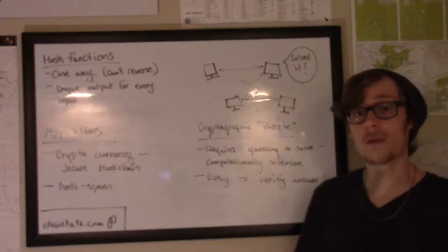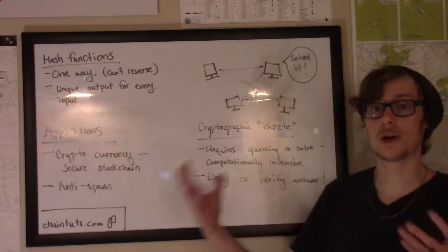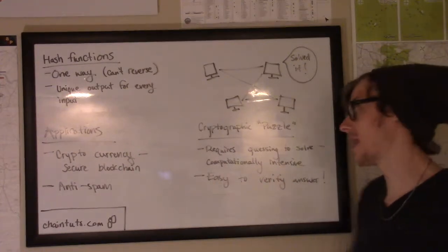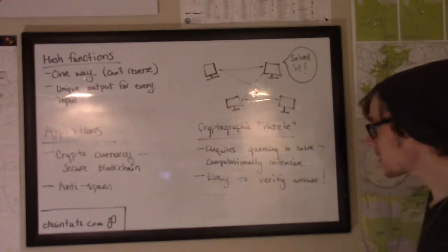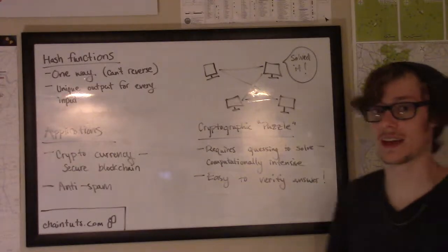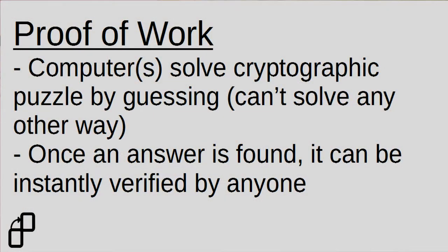So when we're talking about proof of work, nodes or computers across the Bitcoin network or in some other applications are required to solve a cryptographic puzzle. This puzzle requires guessing to solve. There's no equation, there's no other way to find the answer to this problem other than by guessing some inputs to a hash function.